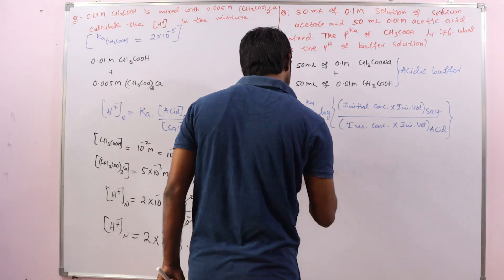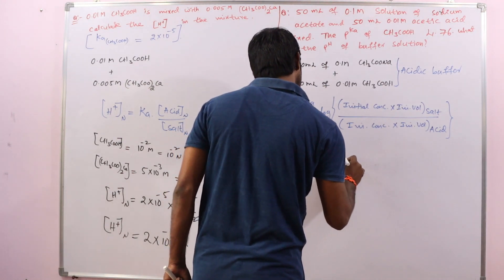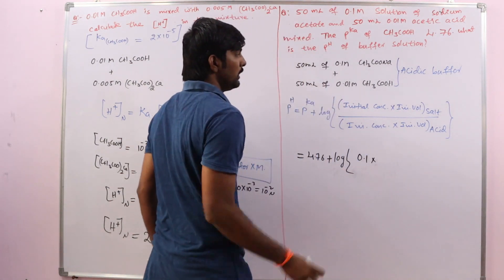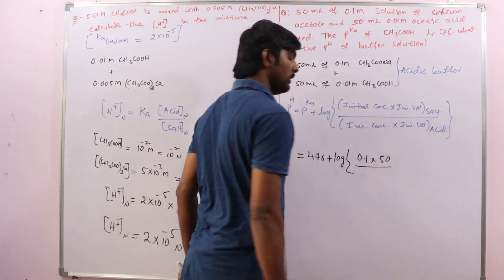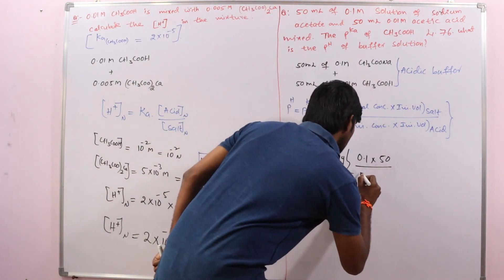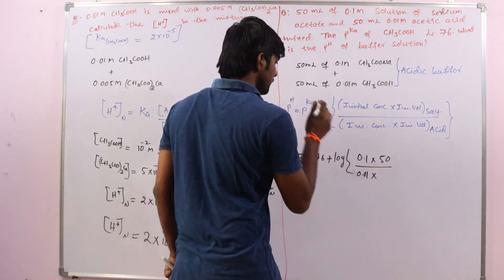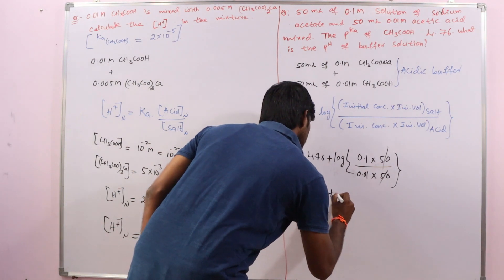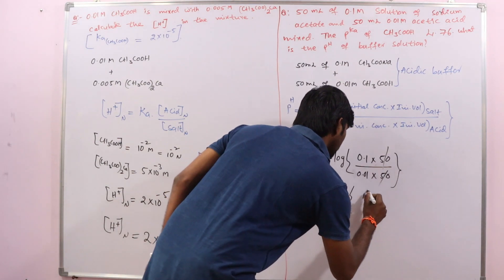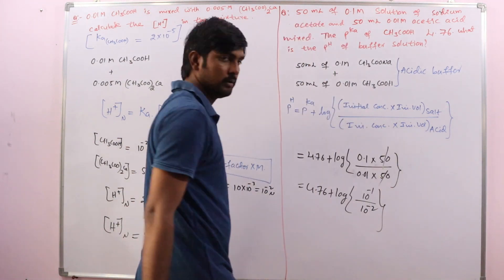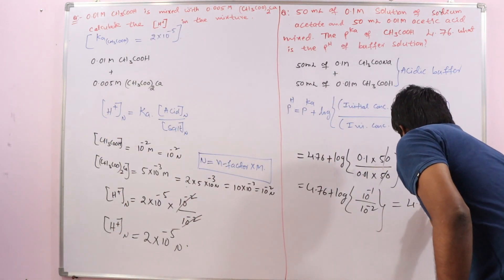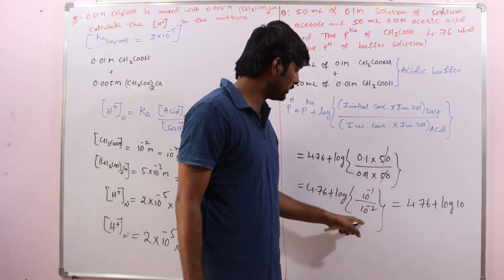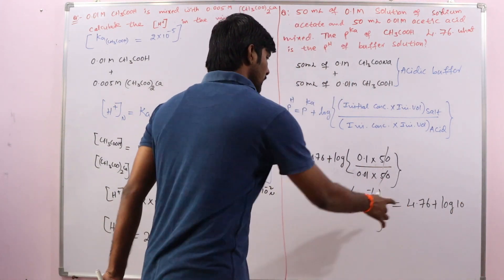Substituting: pKa = 4.76, plus log of (0.1 × 50) / (0.01 × 50). The 50 mL volumes cancel. We get 4.76 + log(0.1 / 0.01) = 4.76 + log(10⁻¹ / 10⁻²) = 4.76 + log(10) = 4.76 + 1.